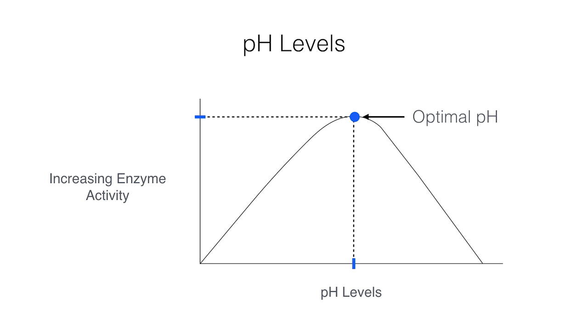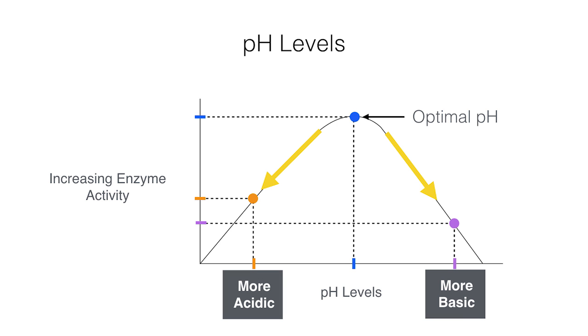If the pH drops, it becomes more acidic, and enzyme activity decreases. If the pH increases, it becomes more basic, and enzyme activity also decreases. Don't get too used to stuff being this easy.